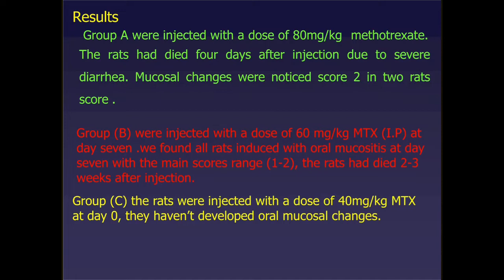In Group B, injected with 60 mg/kg, at day seven all rats could be assessed and showed mucositis with a mean score ranging from score 1 to score 2, though all rats died two to three weeks after injection. In Group C, injected with 40 mg/kg at day zero, no oral mucosal changes developed.